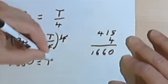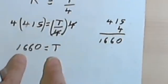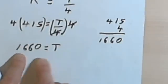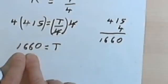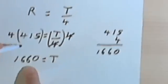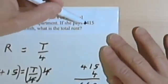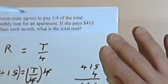So the total rent is 1660. These 4s cancel. So this amount should be the total rent. And again, we could check that. We could divide this by 4, and that should get us back to the 415, the amount that she pays, and then we would know for sure that it checks.